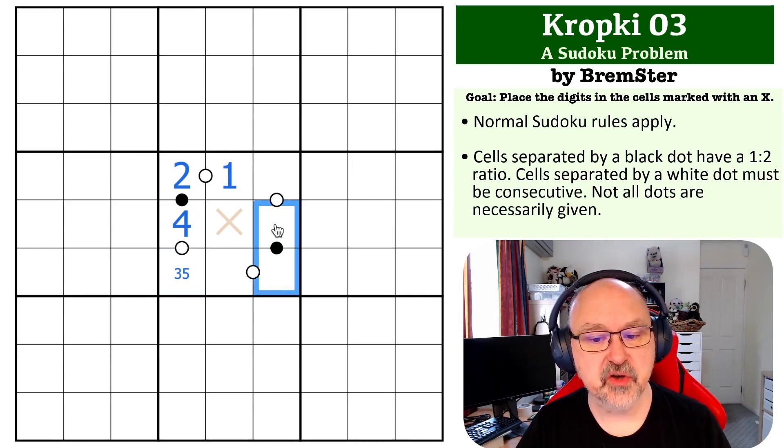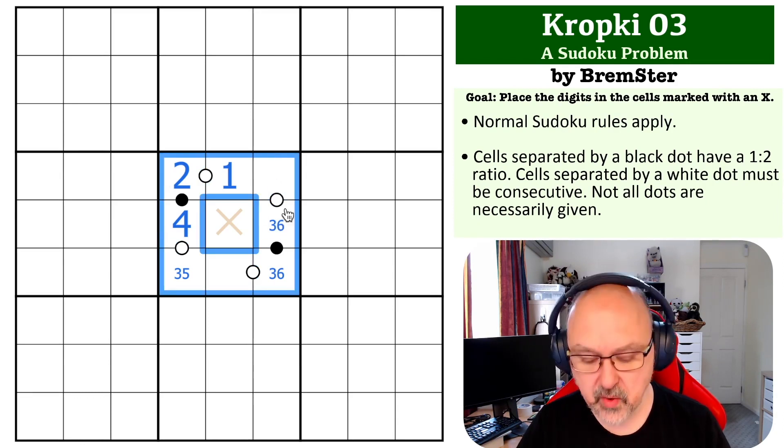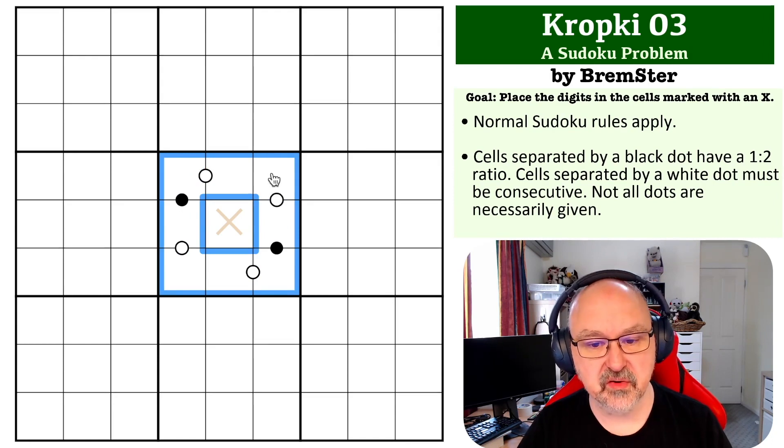Now, on this black dot, because you can't use a one, it couldn't be one-two, it can't be two-four, and it can't be four-eight. So this becomes three-six. But that's broken, because one of these has to be three. But to be consecutive with three, you need two or four, which is not available. So this is not possible. You can never start one of these runs with a one. So all of this is complete nonsense.